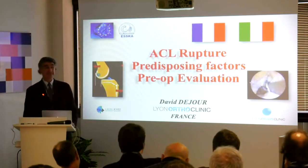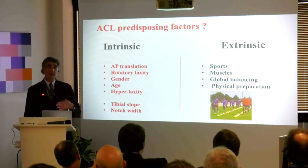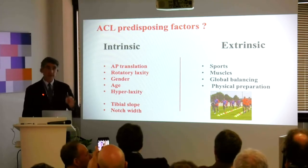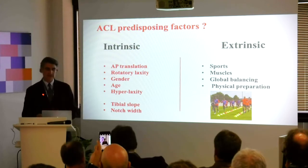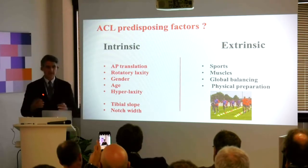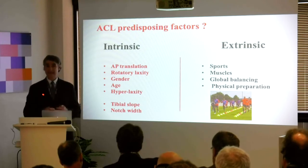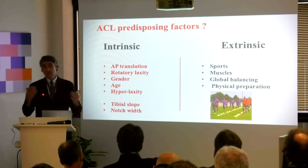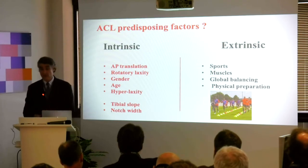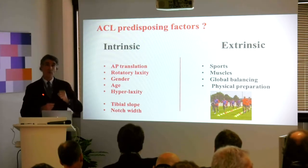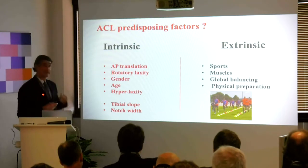Speaking about ACL rupture, I think it's very important to know what leads a patient to have an ACL rupture — maybe because he's playing soccer, maybe because he's playing basketball. But you have intrinsic factors and extrinsic factors. The AP translation, the anterior tibial translation, is very important. The rotatory laxity is also important, and it's a little bit different from the AP translation. Gender, age, and hyperlaxity are all important factors.